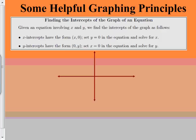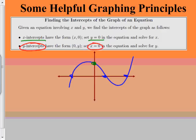Finding the intercepts. We know the x-intercepts are where it touches the x-axis. So if it goes like this, there are three x-intercepts and then one y-intercept. Now, what if I don't give you a picture and I want the x-intercepts? The x-intercepts are where y is zero, and conversely, the y-intercepts are where x is zero.